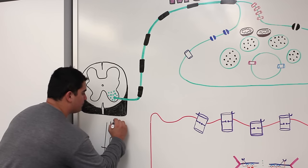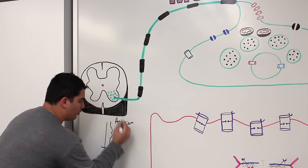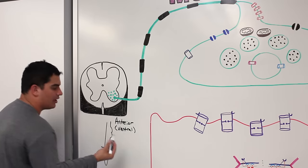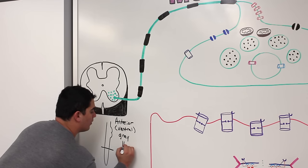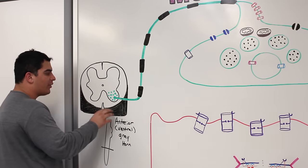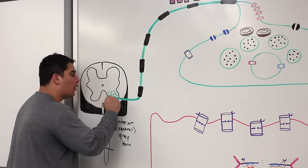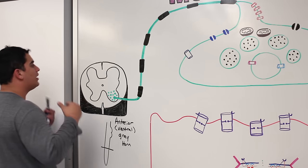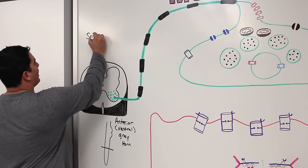This specific part is called the anterior gray horn — and don't be confused if you see 'ventral' in the literature, because anterior and ventral are synonyms. What is in the anterior or ventral gray horn? It is the cell bodies of the somatic motor neurons.